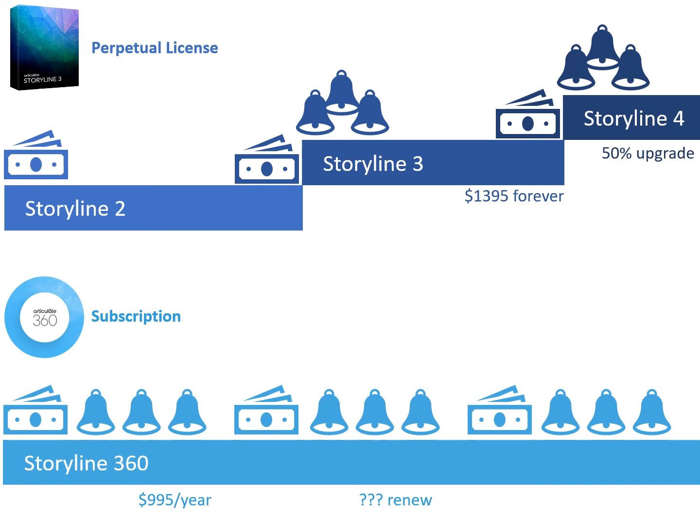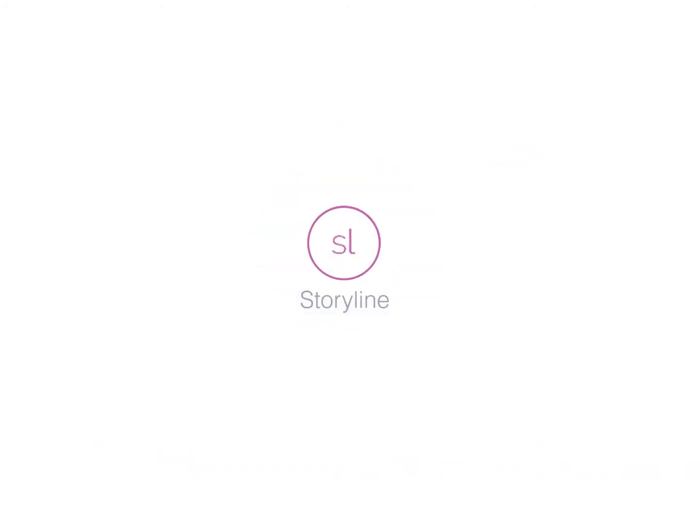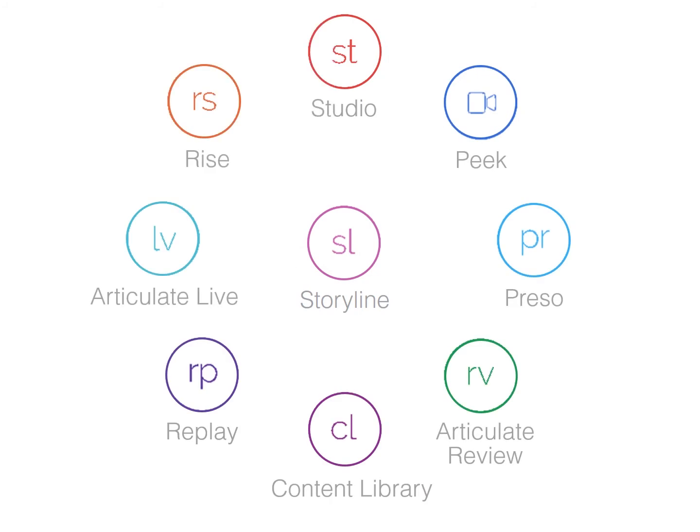The other major difference is that with Storyline 360 you are actually purchasing Articulate 360, which contains, in addition to Storyline, a suite of tools — tools you don't get with the perpetual license. Storyline, Studio, and Rise are all full course authoring tools. Storyline is the most full featured. Studio is a template-based PowerPoint conversion tool, and Rise is a web-based tool specifically designed for mobile responsive courses.